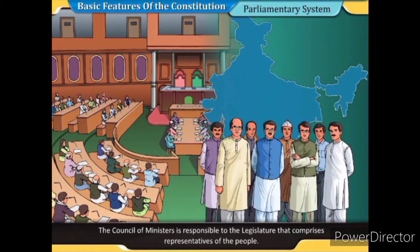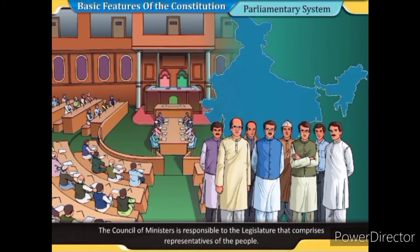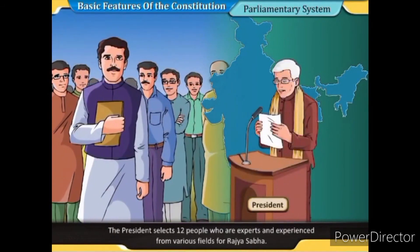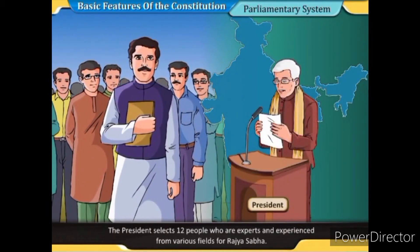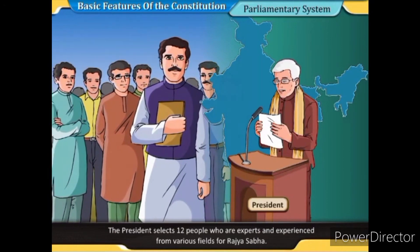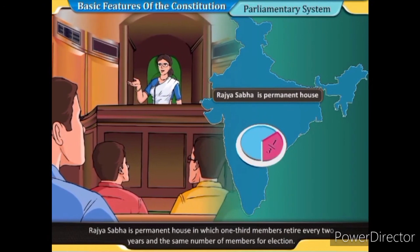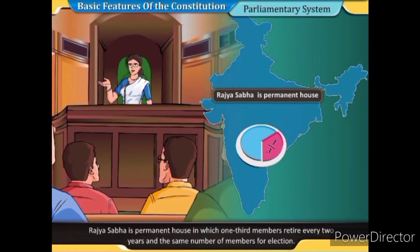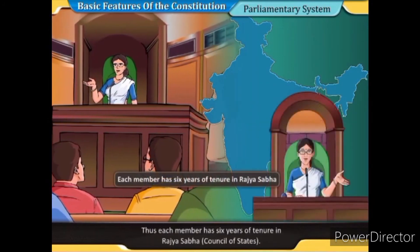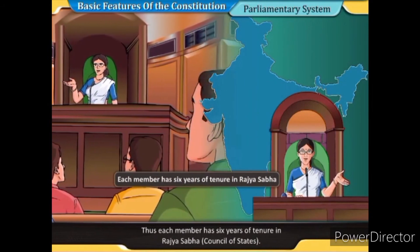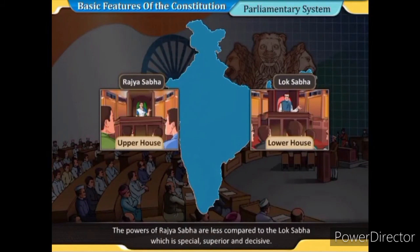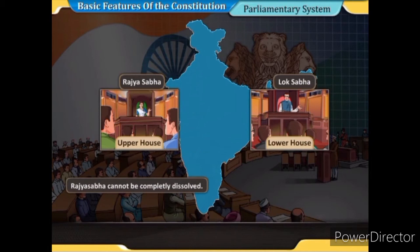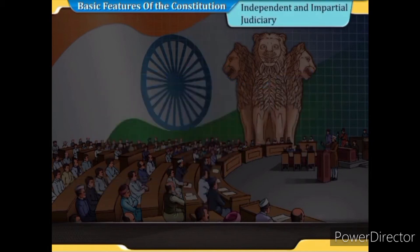The council of ministers is responsible to the legislature comprising representatives of the people. The President selects 12 experts and experienced persons from various fields for the Rajya Sabha. Rajya Sabha is a permanent house in which one-third of members retire every two years, and each member has a six-year tenure. The powers of Rajya Sabha are less compared to the Lok Sabha, which is special, superior, and decisive. Rajya Sabha cannot be completely dissolved.